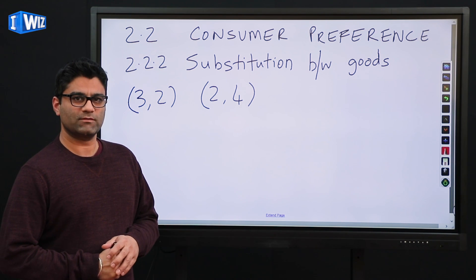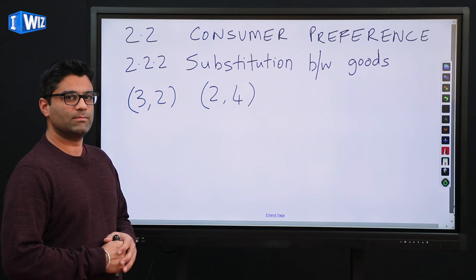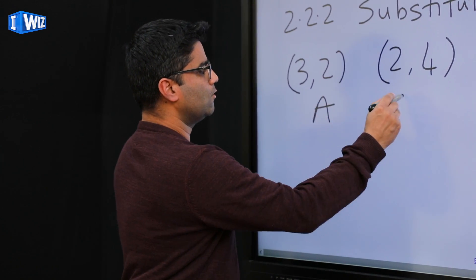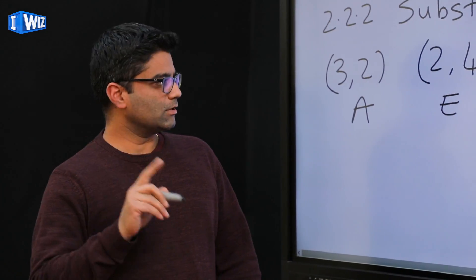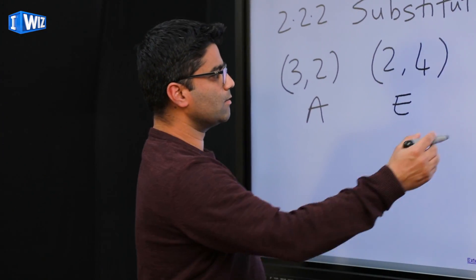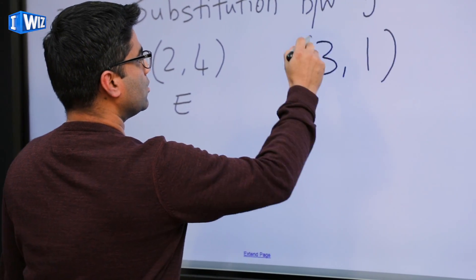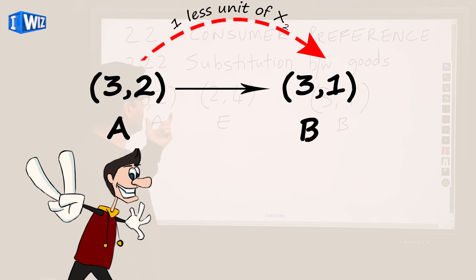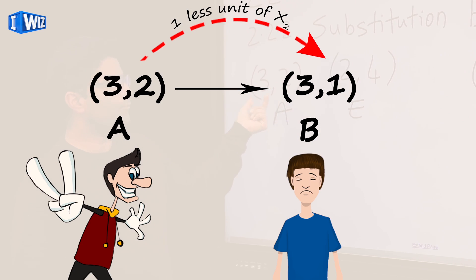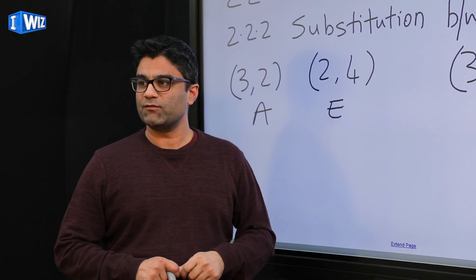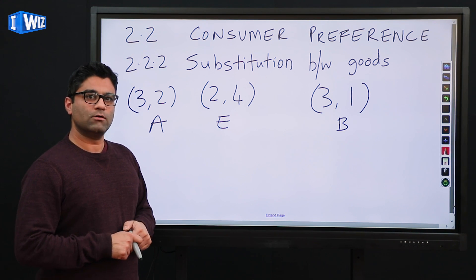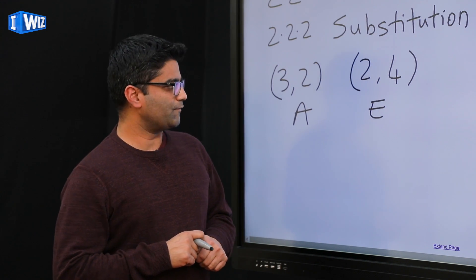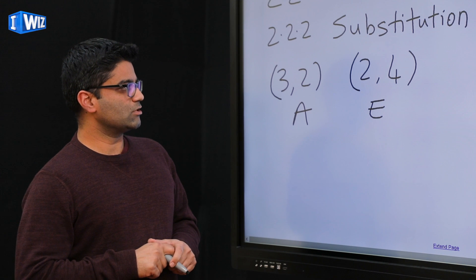Hey guys, today we're going to get back to the topic of consumer preference and specifically we'll talk about substitution between goods. In the previous video I asked you a question between bundle A and bundle E about what you can tell me about your preferences. As a quick recap, monotonic preferences tell us that you will always prefer bundle A over bundle B because you're getting more of the second good without giving up any of X1. If you're not comfortable with monotonic preferences, you should review that video before continuing with the concept of substitution between goods.